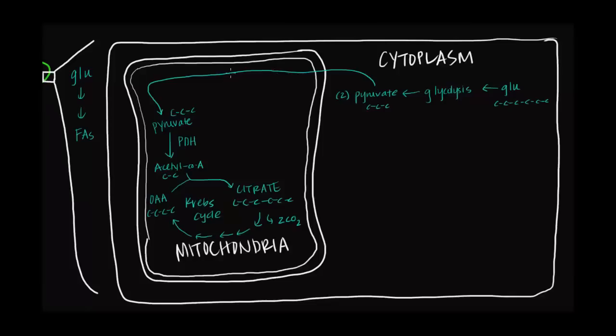Alright, so after that quick whirlwind tour of the breakdown of glucose, you might be wondering, where do we convert glucose into fatty acids? And it turns out that one of the intermediates of the breakdown of glucose, which is acetyl-CoA, this two-carbon molecule located in the mitochondrial inner matrix, is a precursor for fatty acid synthesis.